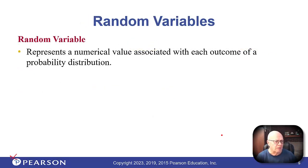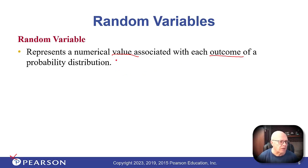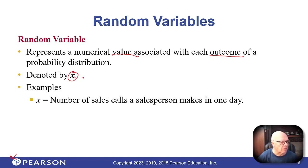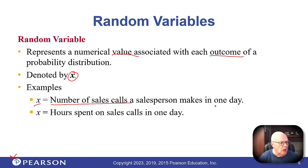First of all, what's a random variable? It's a value that's associated with each outcome of a probability distribution. It's represented by X. For example, X could represent the number of sales calls that a salesperson makes in one day, or it could represent the hours spent on sales calls in one day.